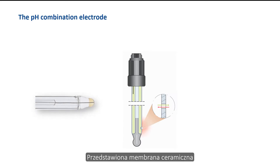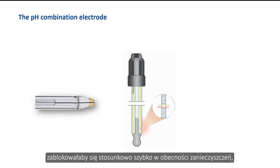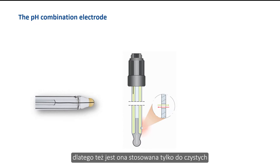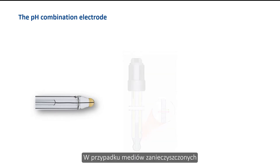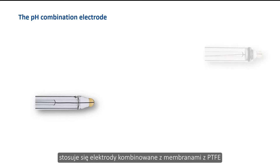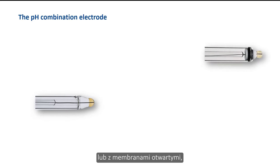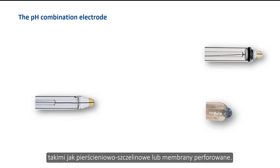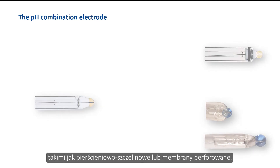The ceramic diaphragm would block relatively quickly in the presence of contamination, which is why it is only used for clean or slightly contaminated media. For contaminated media, combination electrodes with PTFE diaphragms or those with open diaphragms such as annular gaps or perforated diaphragms are used.